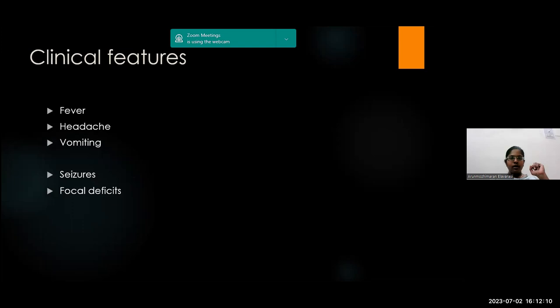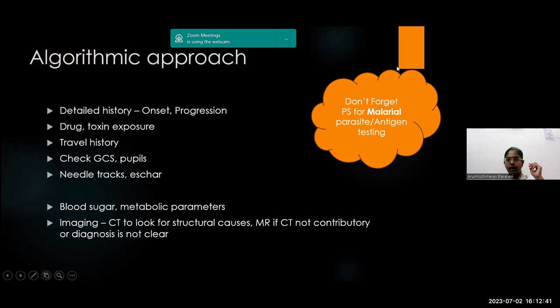The clinical features are fairly protean. Fever, headache, and vomiting are common — similar to acute bacterial meningitis — and viral encephalitis also shares most of the same clinical features. The presence of focal deficits and seizures is slightly more common in viral encephalitis compared to acute bacterial meningitis. We need to have an algorithmic approach.